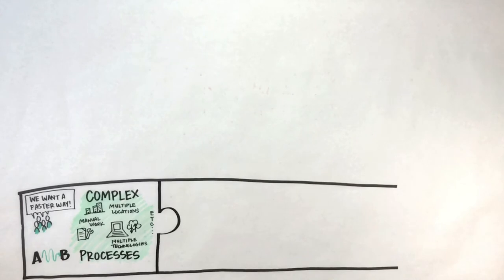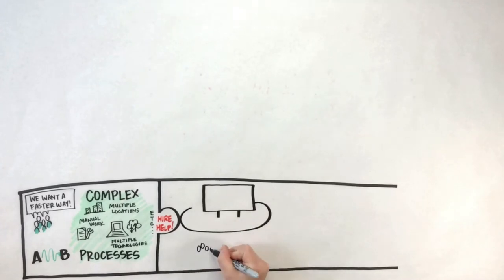And they're staring in the face of a process that's anything but a straight line. Their current process has too much manual work, too many workarounds, too much inefficiency. Sound familiar?